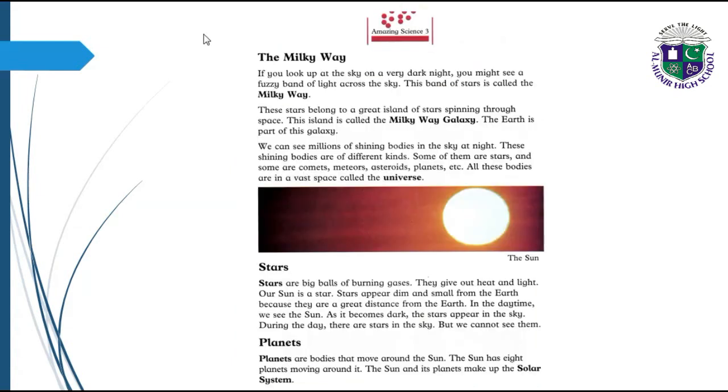The Milky Way: If you look up at the sky on a very dark night, you might see a fuzzy band of light across the sky. This band of stars is called the Milky Way. These stars belong to a great island of stars spinning through space. This island is called the Milky Way galaxy. The Earth is part of this galaxy.